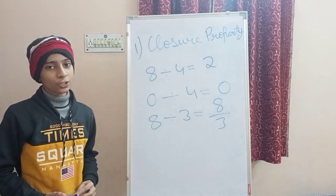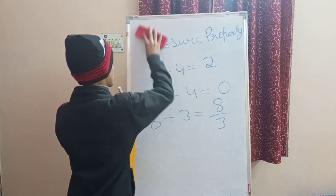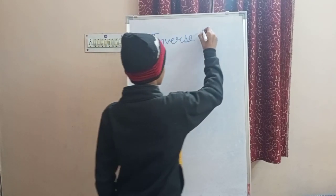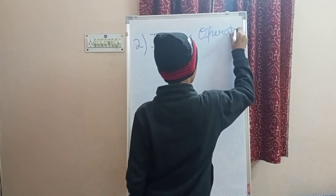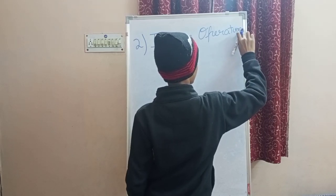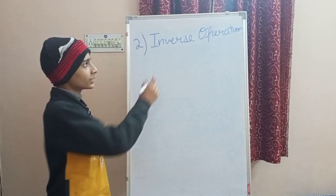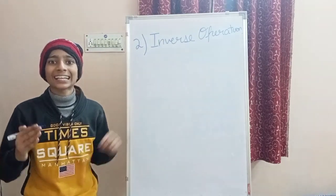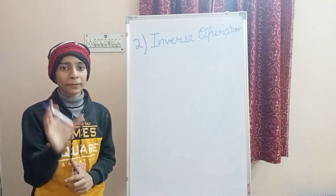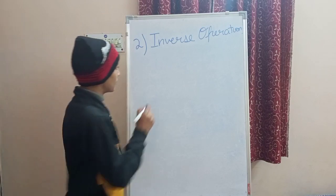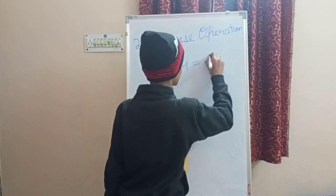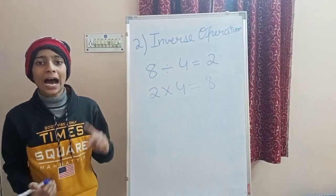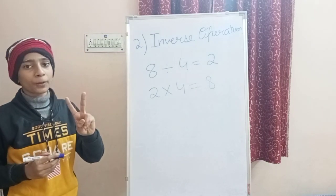The second property of division is inverse operations. Multiplication and division are inverse of each other. For example, 8 divided by 4 becomes 2, and when we do 2 into 4 it becomes 8. This means multiplication and division are inverse of each other.